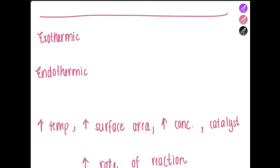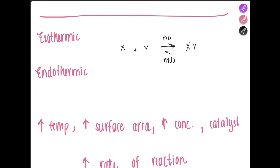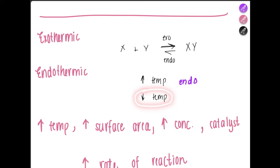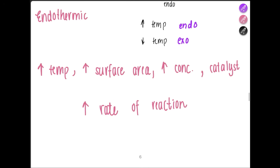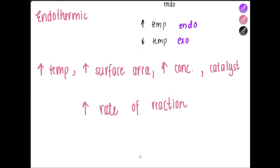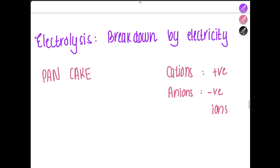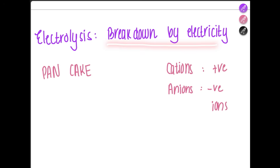Exothermic reactions release heat to the surroundings, while endothermic reactions take heat from the surroundings into the system. If you increase the temperature, the reaction will move in the direction that opposes the change — so the endothermic direction is favored. If you reduce the temperature, the exothermic direction is favored and heat is released to the surroundings. Remember: increasing temperature, increasing surface area, increasing concentration, and adding a catalyst all increase the rate of reaction. A catalyst reduces the activation energy.